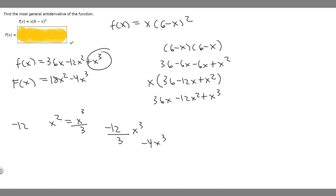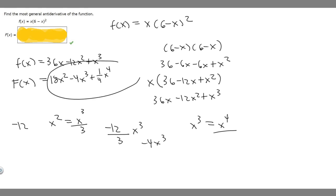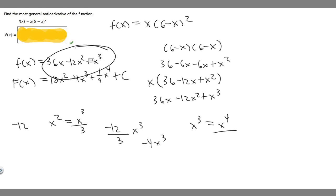Now we need the antiderivative of x cubed. We add 1 to the exponent to get x to the 4th, and divide by 4, so that's 1 over 4 times x to the 4th. We're not done — we have to add C, because whenever you take the antiderivative, you add a constant. So the general antiderivative is 18x squared minus 4x cubed plus 1 over 4 times x to the 4th plus C.